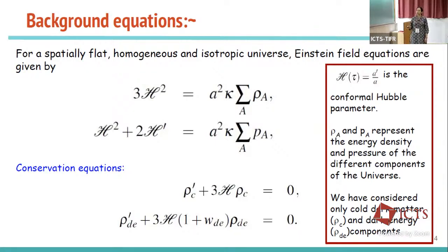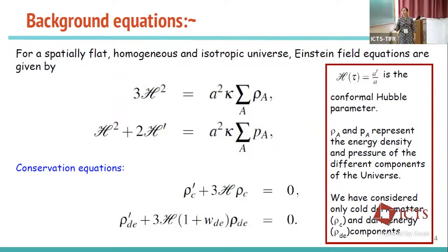Here rho_a represents the energy density of any component — radiation, dark matter, dark energy, whatever the universe is comprised of — and p_a represents the corresponding pressure. Since the total energy density of the universe is conserved, we have conservation equations for these sectors. For simplicity, I have considered that the universe comprises only two components: cold dark matter, which includes normal baryonic matter, and the dark energy component.